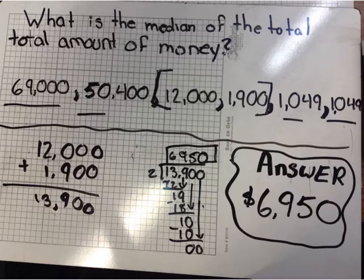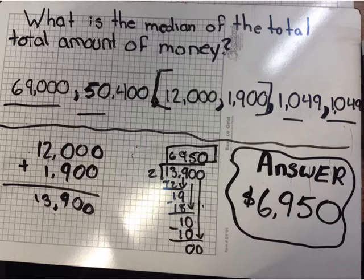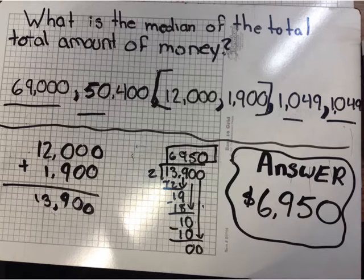What is the median of the total amount of money? What we're doing is just lining up all the amounts of money. Usually there's supposed to be one amount in the end, but since there was an even amount of numbers, we ended up with 2. To figure it out, we're just going to average them. Adding $12,000 with $1,900 gives us $13,900, and dividing that by 2 gives us the answer of $6,950.